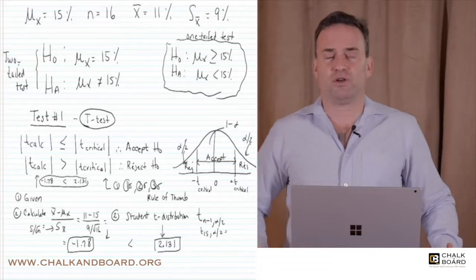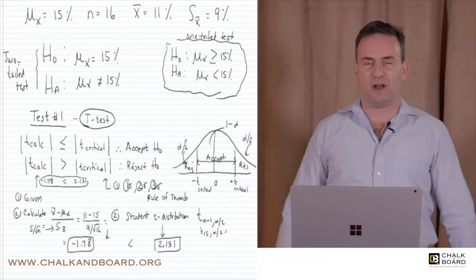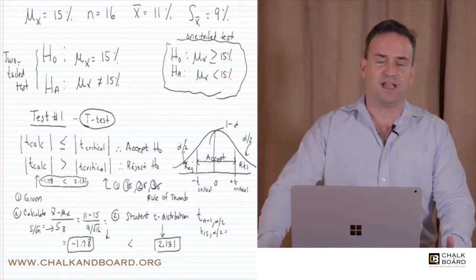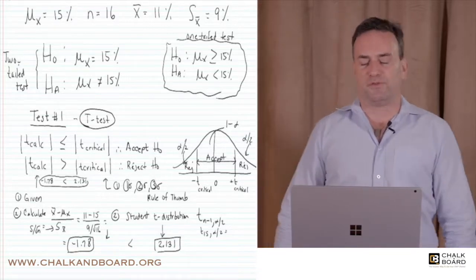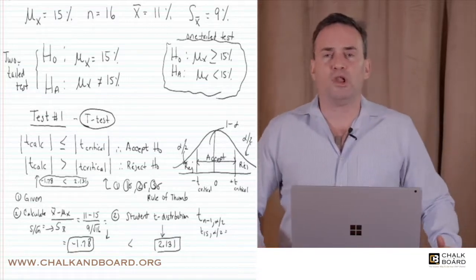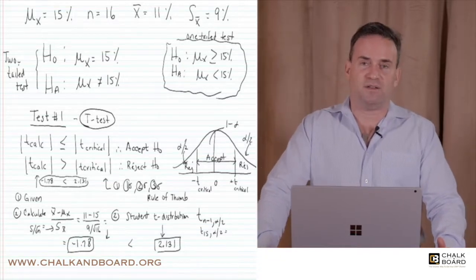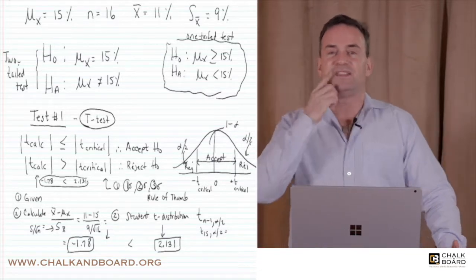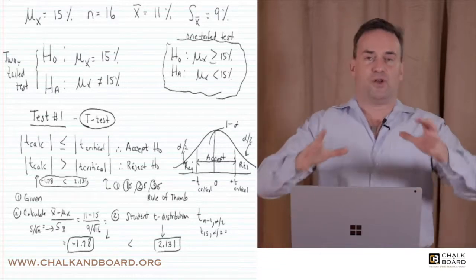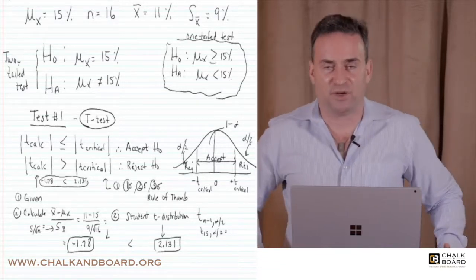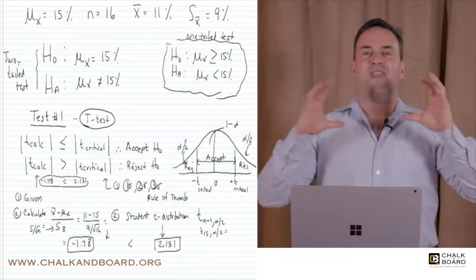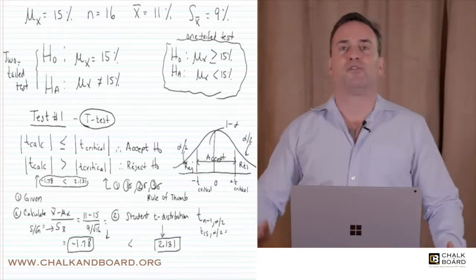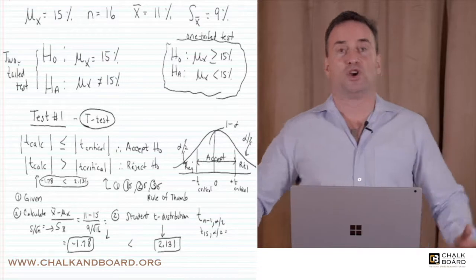Where do we get the critical t? From the student t-table or the rule of thumb. The rule of thumb gives values of one, two, or three standard deviations depending on the confidence interval. If you're using a 95% confidence interval — which means a 5% level of significance — that's approximately two standard deviations away from the mean, so you use the number two as your critical t.